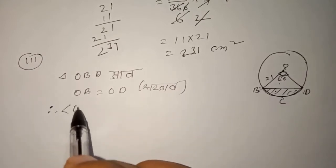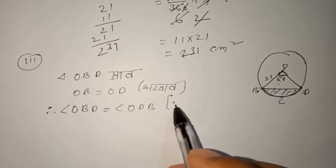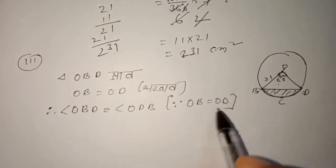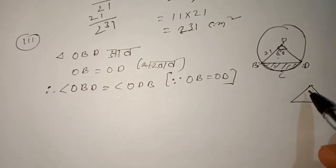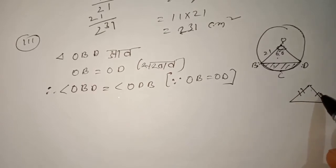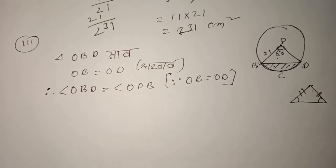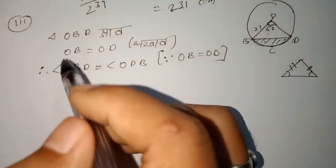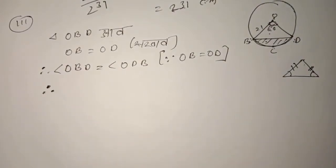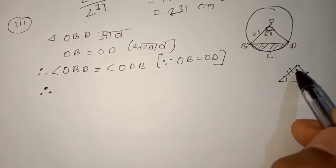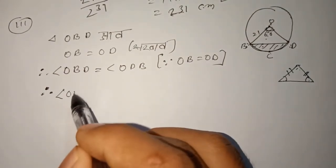Therefore, the angle OBD is equal to the angle ODB, since OB equals OD. In this triangle, OD is the relevant angle — angle OBD equals angle ODB.